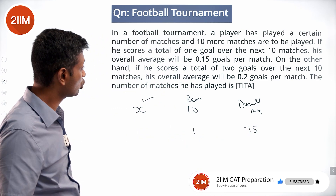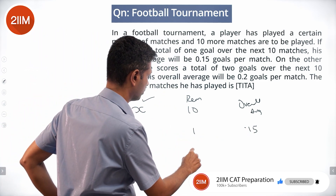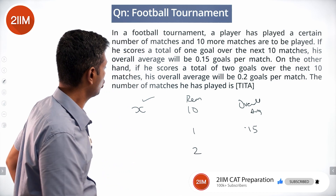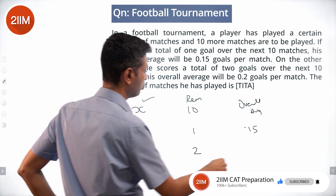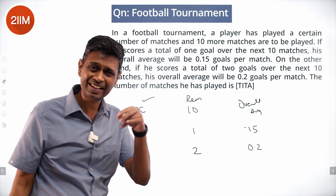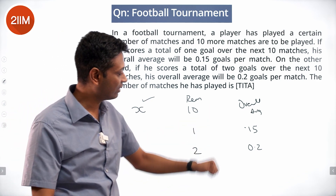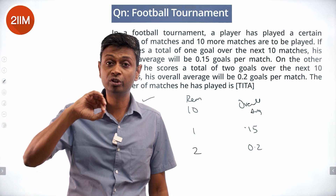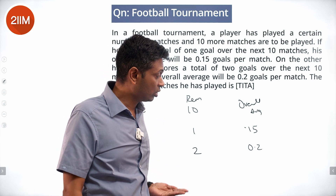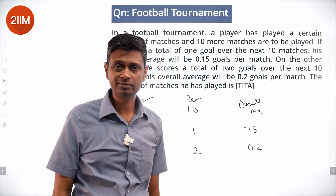On the other hand, if he scores a total of 2 goals over the next 10 matches, his overall average will be 0.2. So one extra goal increases his average by 0.05.